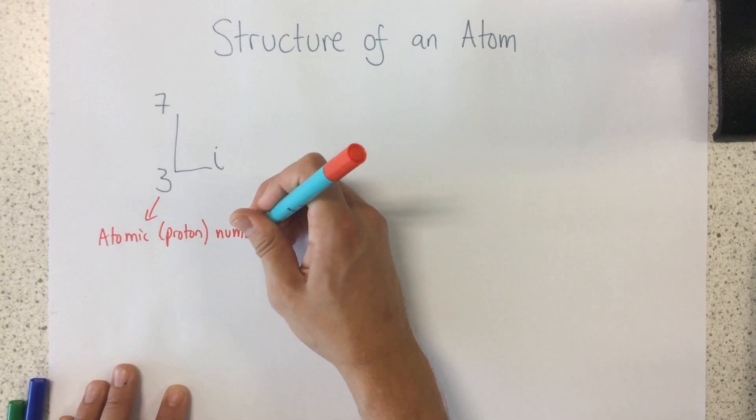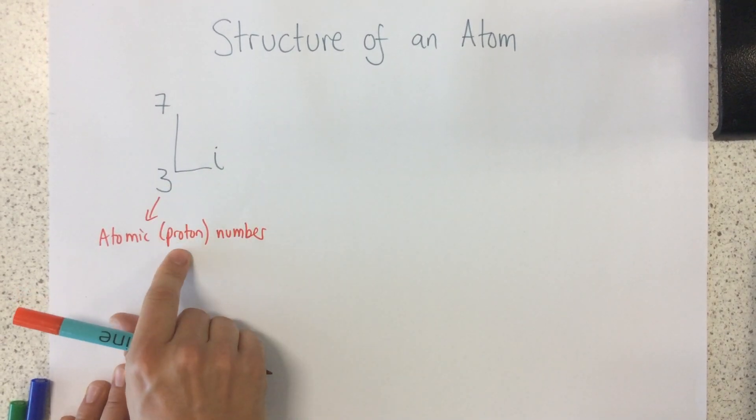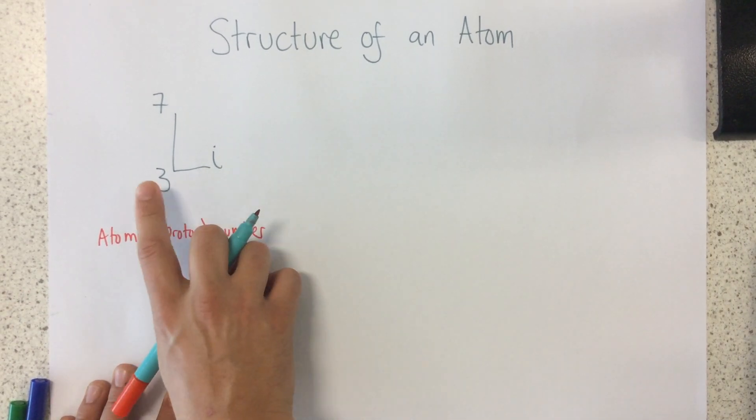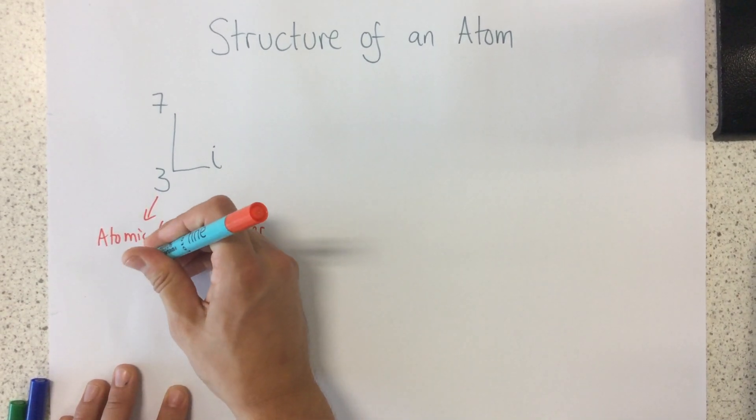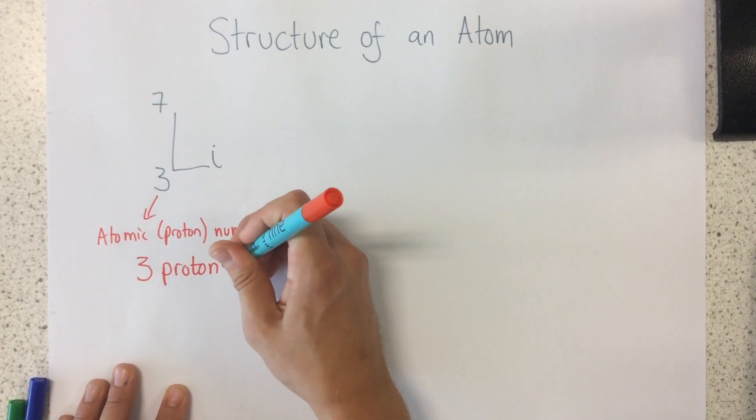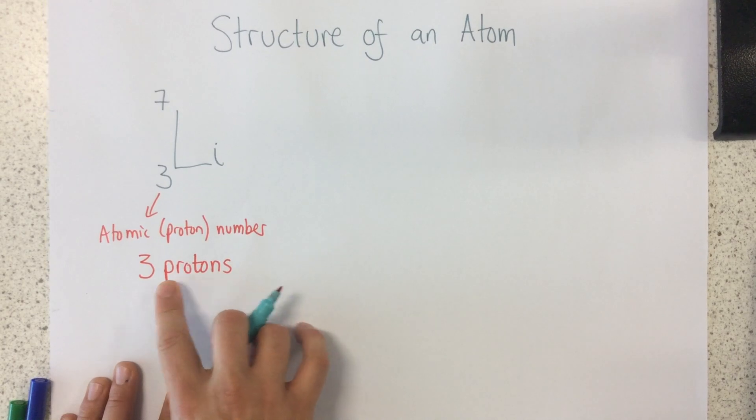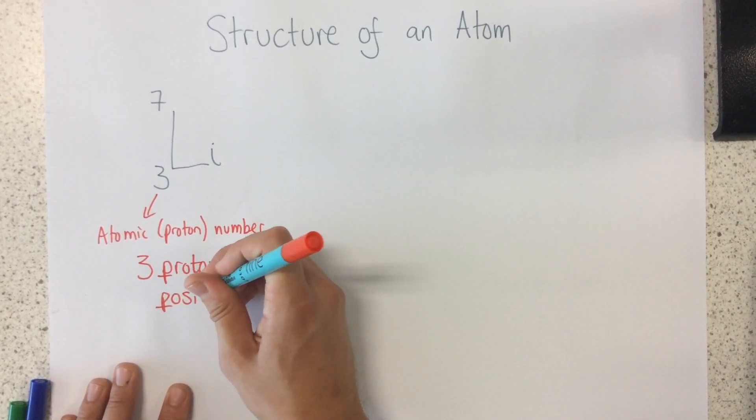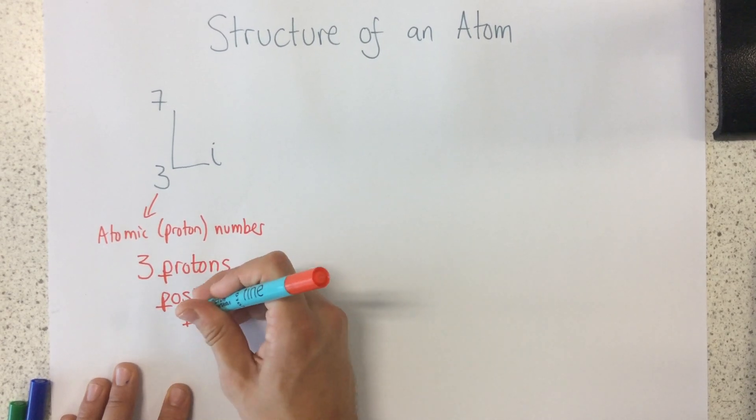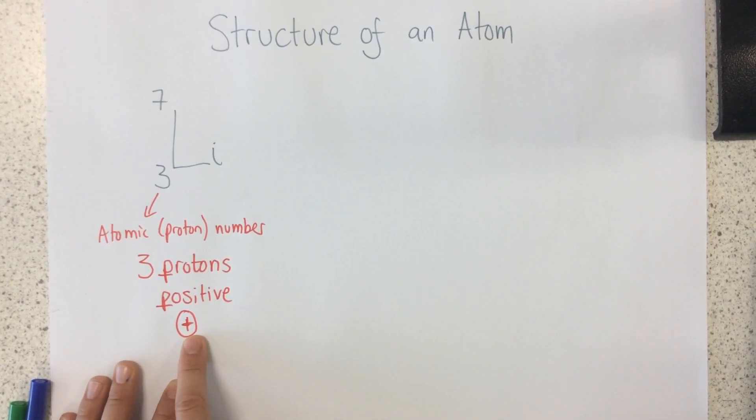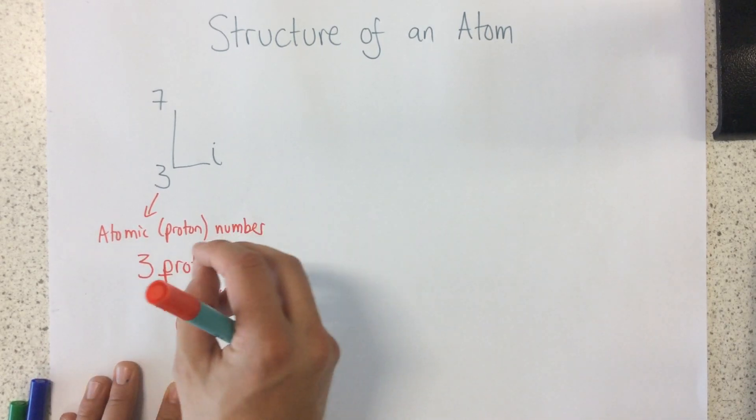Now, easy to remember this. The proton number tells us how many protons there are. So this particular element, because it has a proton number of 3, we know that it has 3 protons. Now, I know that protons are positive. So protons are my positive subatomic particles. A subatomic particle is a particle smaller than an atom.